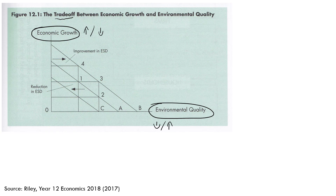Let's have a look at this arrow here — we're moving from this curve up to here. So what we're saying is that if we move from, let's say, point 0.1 to 0.4, what we are doing is seeing an improvement in ecologically sustainable development. This is what ESD stands for.